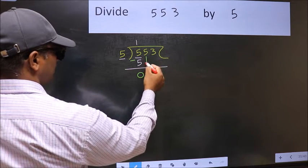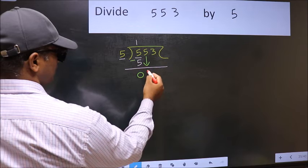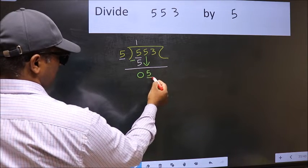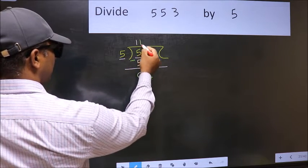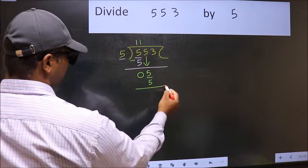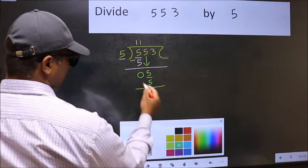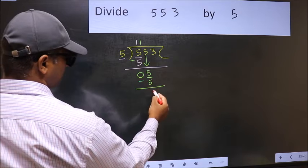After this, bring down the beside number. So 5 down. Now 5. When do we get 5 in 5 table? 5 once 5. Now you should subtract. 5 minus 5, 0.